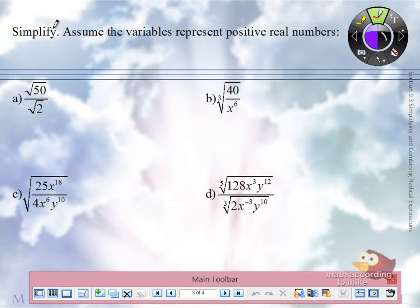So part A, there's a couple ways you can do this, but using the quotient rule, because that goes in both directions, we can write this as the square root of 50 divided by 2. What is 50 divided by 2? 25. So what is the square root of 25? 5.